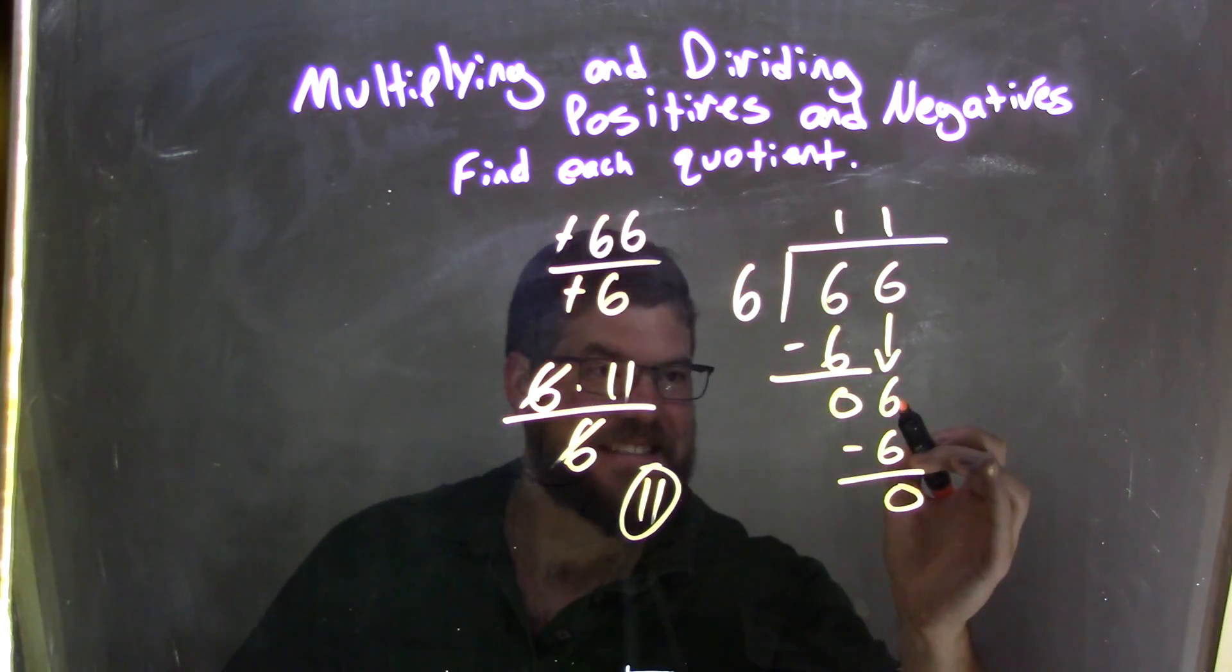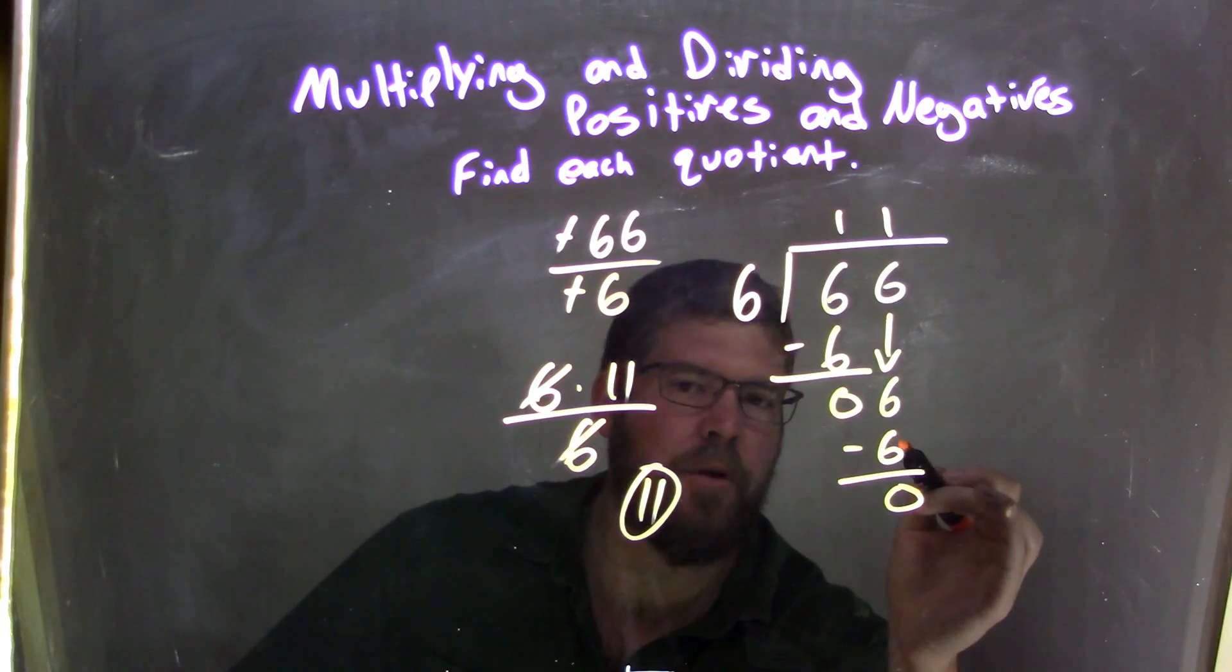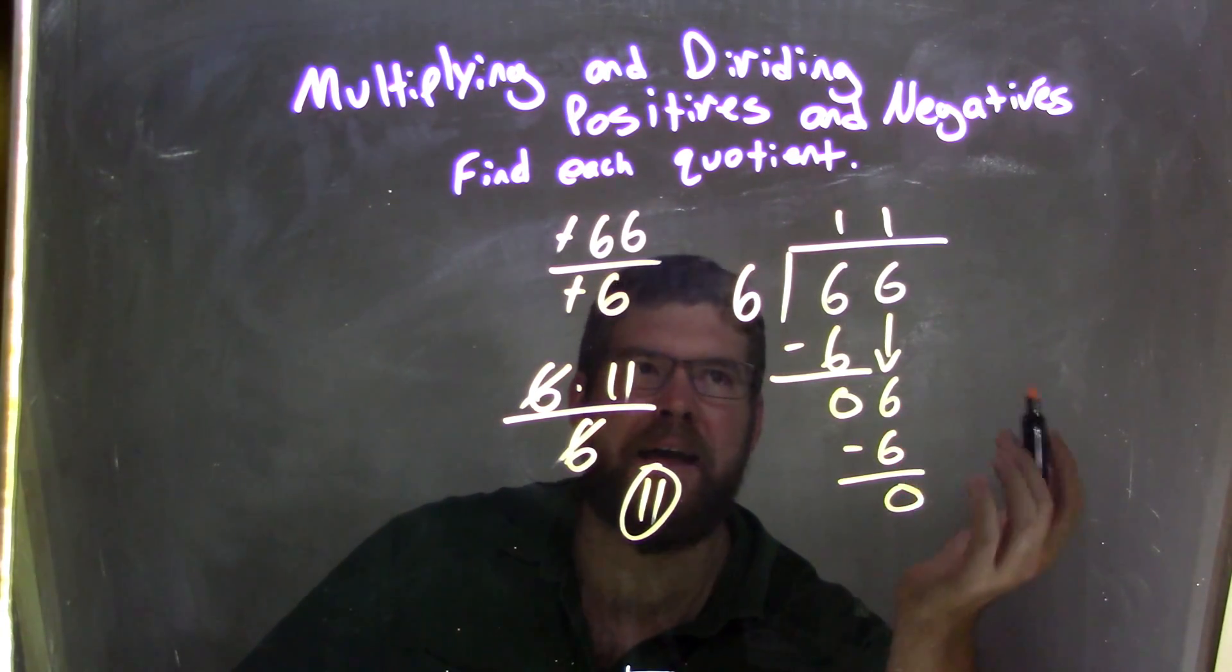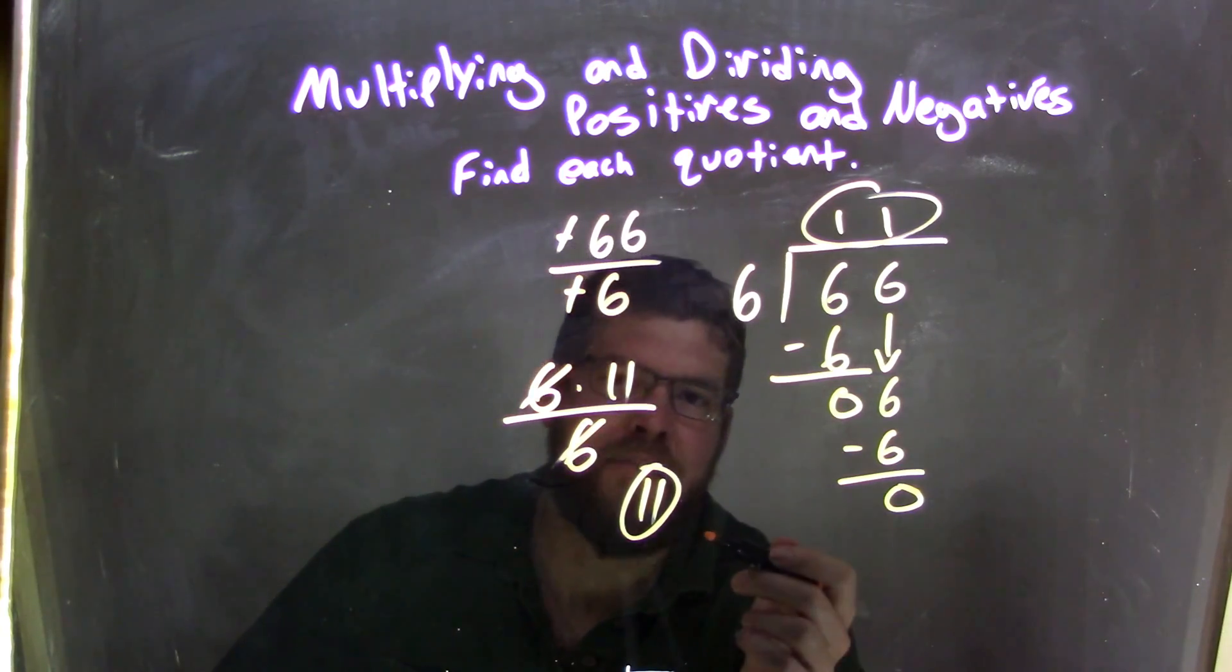And then 6 goes into that 6 one time. 1 times 6 is negative 6. Or, 6 right here. We subtract it and we're left with 0. And so now we're done. And this is our final answer of 11 up there. Or we have the final answer of 11 down here.